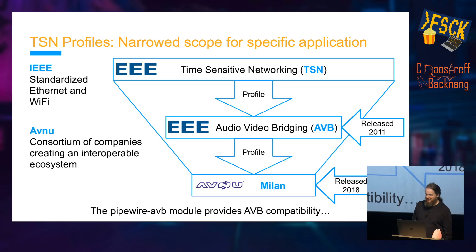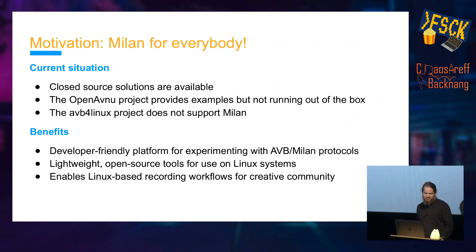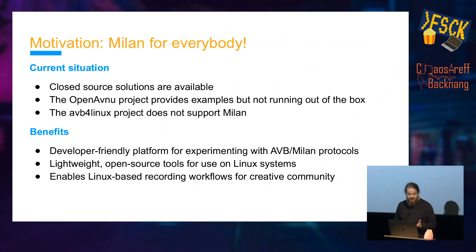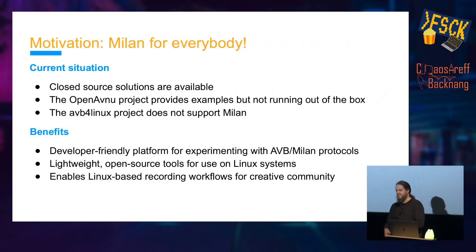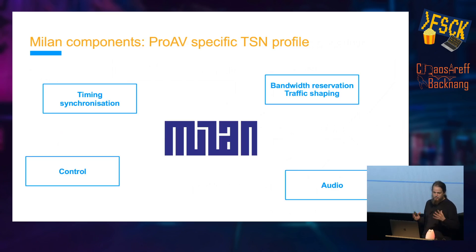PipeWire already has an AVB module, so I thought: let's give it a try and implement Milan on top of it — how hard can it be? Looking at the current situation, there is no open source Milan solution available to my knowledge. There are a couple of open source projects that either don't completely cover Milan, or the AVB for Linux project which supports only legacy AVB, not Milan. The benefits of an open source solution are obvious: developers can more easily explore the topic, and people from the creative community who want to work with Linux devices could do so as well.